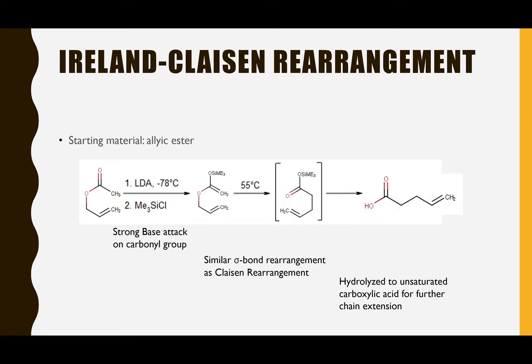In 1972, Robert Ireland illustrated a variant of Claisen rearrangement. It converts an allyl ester to a gamma-delta-unsaturated carboxylic acid using strong bases and chlorotrimethylsilane. It undergoes a similar 3,3-sigmatropic rearrangement as the Claisen rearrangement. The base-catalyzed environment allows the reaction to take place under relatively mild conditions, and the TMS group is introduced to protect the alkoxy group from nucleophilic attack.